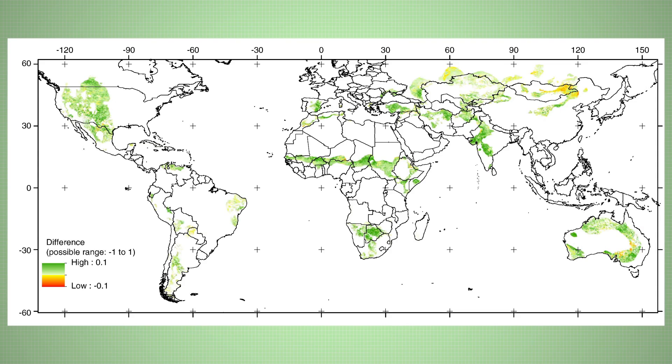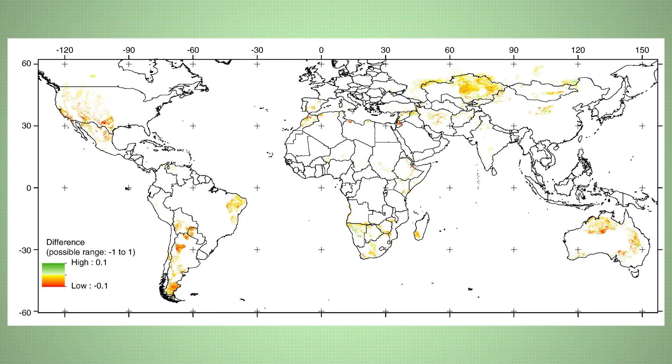Climate change is also shifting rainfall patterns and increasing the likelihood of drought in many semi-arid regions such as the western United States and southwestern Australia. So whilst higher levels of carbon dioxide is helping to green some parts of the planet, the changed climate that is caused by the same carbon dioxide is doing the opposite elsewhere.